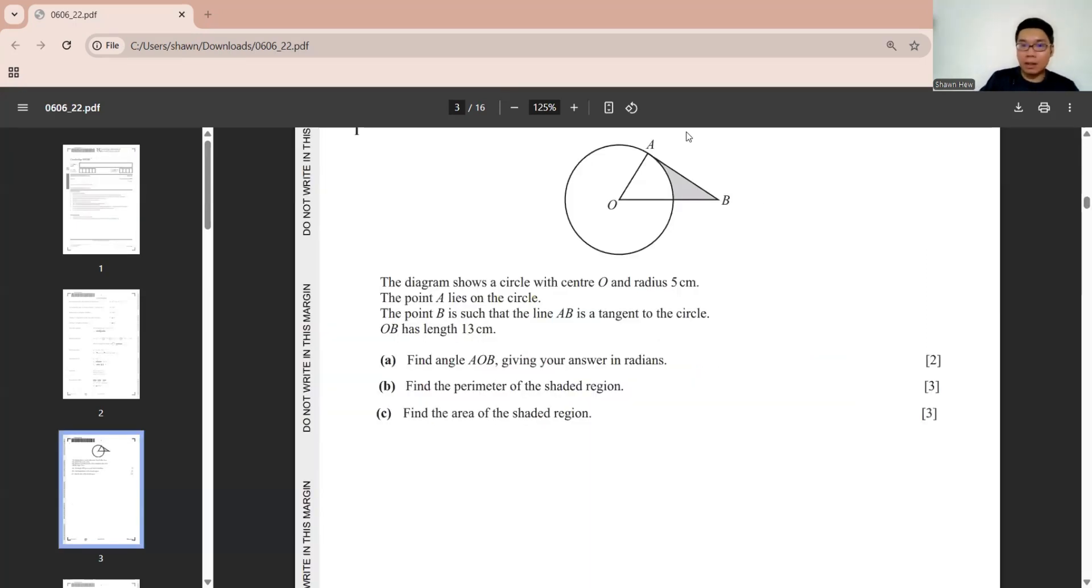Question 1 is circle. The circle has the center here, and then radius is 5. B is such that AB is a tangent, so here is 90 degrees. OB length is 13. That means here is 8. Find the angle of AOB. We just use SOHCAHTOA. AOB is here. This is adjacent, this is opposite, this is hypotenuse. So we have adjacent and hypotenuse. We use cos. Adjacent over hypotenuse. Answer is 1.18. Must be in radians.